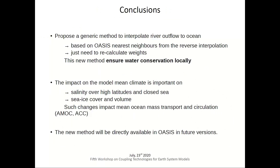In conclusion, we propose a generic method to interpolate river outflow to the ocean, based on OASIS nearest neighbors from reverse interpolation — we simply recalculate the weights, and this method ensures local water conservation. By doing this we see a large impact on mean climate, so it is important to treat this coupling accurately. The model now needs retuning because sea ice cover is too large, and this has strong impacts on large-scale ocean mass transport. This method should be available in future versions of OASIS.